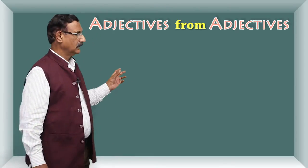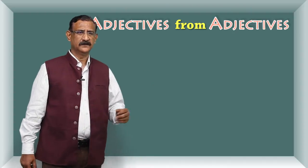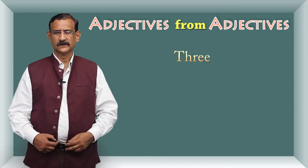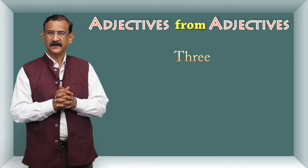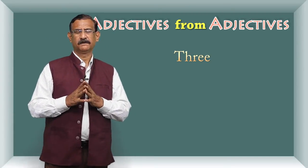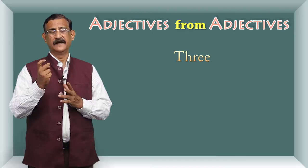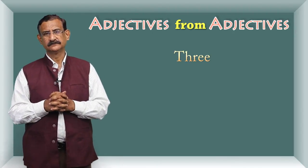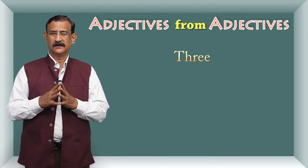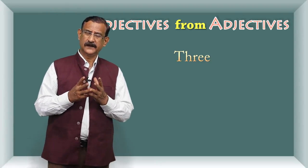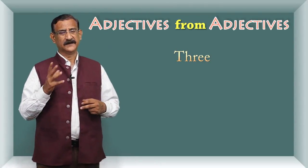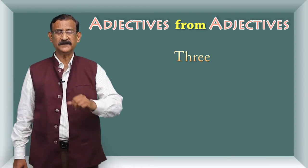For example, the word 'three' — three is one adjective, an adjective of quantity, or numeral. Lekin three jo shabd hai woh adjective hai, lekin 'threesome' bhi adjective hai.